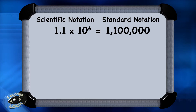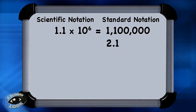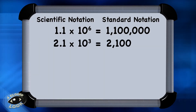The next example of converting from standard notation to scientific notation is 2,100. There's an understood decimal here. So move that decimal one, two, three places. Now you have 2.1. And since this represents a large number, 2,100, moving the decimal to the left three places represents the exponent. So you have 2.1 times 10 to the third.